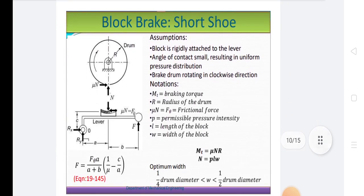Block brake or short shoe. There are some assumptions like block is rigidly attached to the lever, angle of contact small resulting in uniform pressure distribution, brake drum rotating in clockwise direction. MT is equal to braking torque. R is equal to radius of the drum.